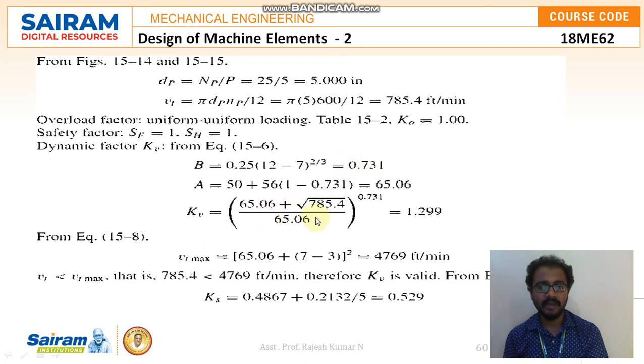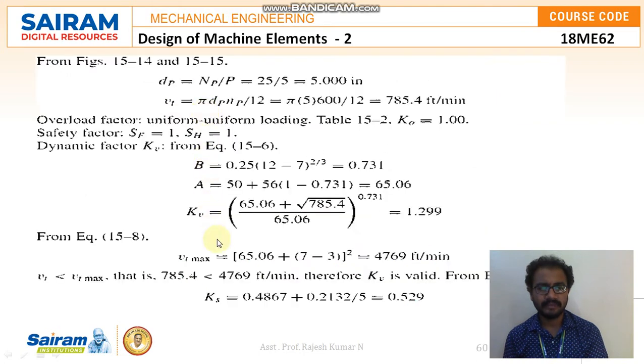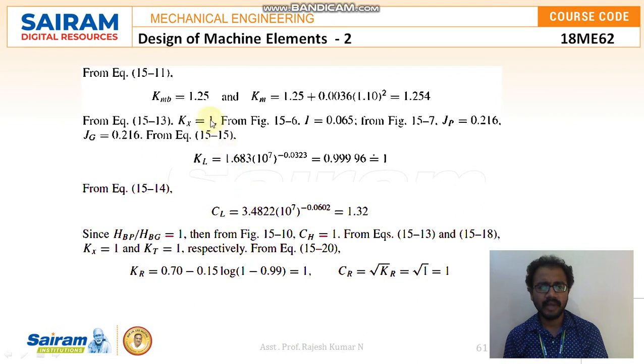The formula would be for A and B. Already I have calculated the A value 65.06 and B value is 0.731. While substituting A and B value I am getting the velocity factor KV as 1.299. And moving to the next one, based on this KV value I will be finding out the module based on the range. Here you can see I am keeping on increasing like 1.1, 1.25 like that. Finally I am getting the K value as 1 because this is the required range we are looking for which is closer to 1. So it is 0.9996, that is the value.